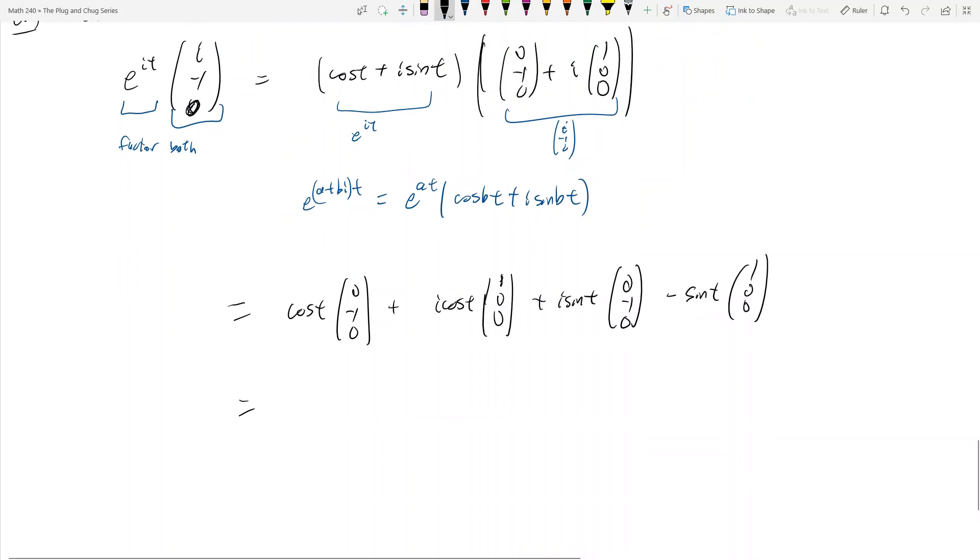And we want to group the real and imaginary part. So this becomes cosine t, 0, negative 1, 0. And now I want to group it with the sine term, because there's no i in front of it, minus sine t, 1, 0, 0, okay? And then now I have plus i times cosine t plus sine t, right? So not quite, but cosine t, 1, 0, 0, plus sine t, 0, negative 1, 0, right? So now I took the terms with the i's in front of them, and I grouped them together, okay?